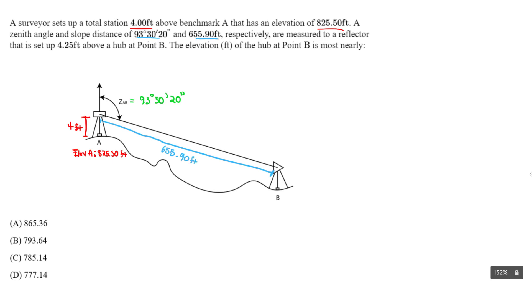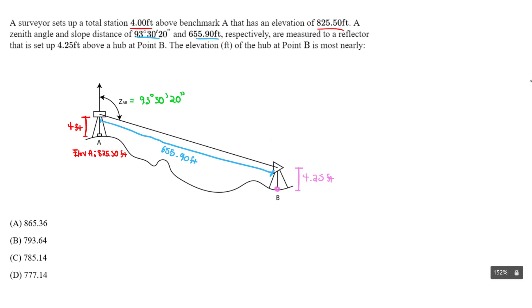These values are measured to a reflector — our reflector is the instrument at B, set up 4.25 feet above the hub at point B. So the hub is on the ground, and the reflector height above it is 4.25 feet. We want to find the elevation at the hub at point B in feet.